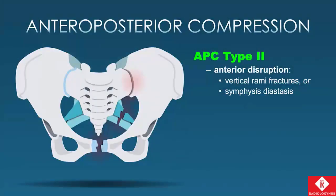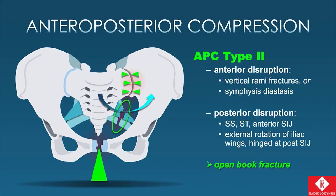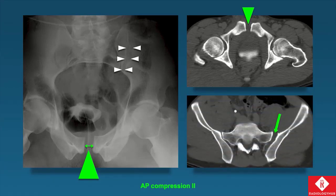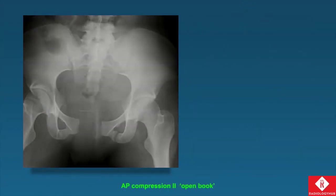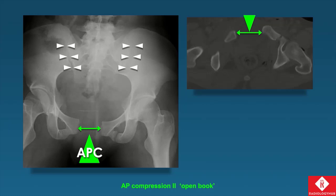The APC type 2 injury again can have symphysis disruption or vertical fractures through the rami if the force is slightly off midline. Now we go through the pelvic floor ligaments — involving the sacrospinous and sacrotuberous ligaments — and open up the anterior SI joint as well, creating pelvic instability and external rotation of the hemipelvis. This is what we typically refer to as the open book fracture. It can be just one side or bilateral. Here we see widening anteriorly and widening of the left anterior SI joint. On CT, there's widening anteriorly and SI joint disruption on the left side.